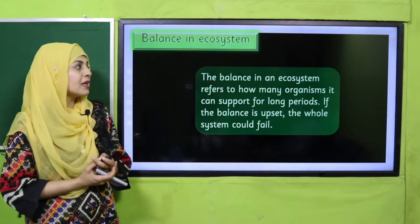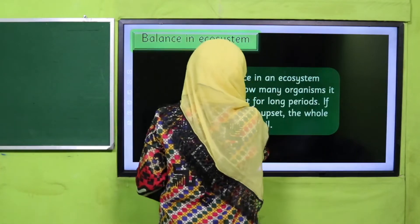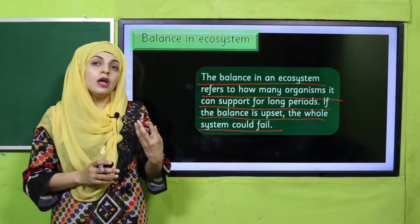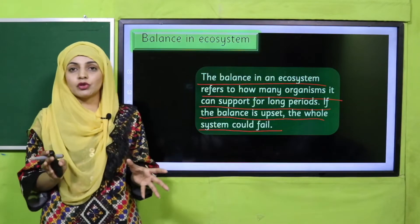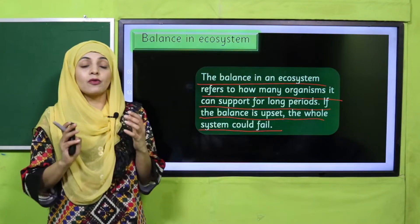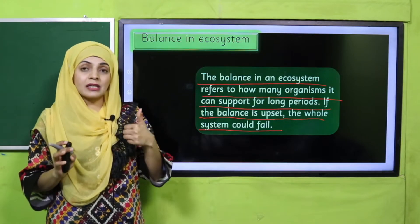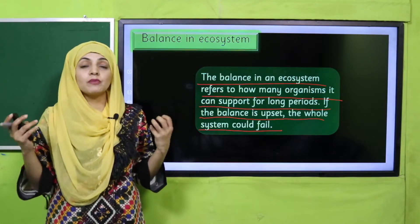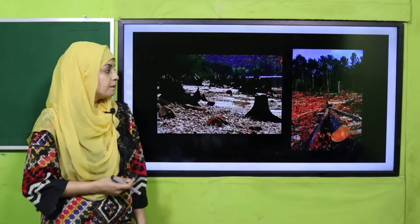The balance in an ecosystem refers to how many organisms it can support for long periods. If the balance is upset, the whole system could fail. A balanced ecosystem is one that can support more life and go on for a long time, and the inhabitants there have more time. A successful and balanced ecosystem supports more living organisms.